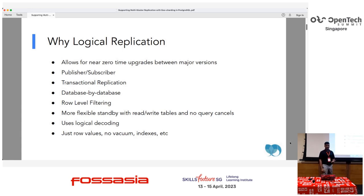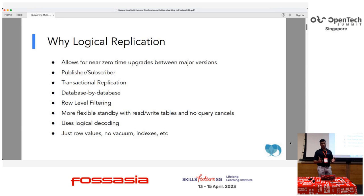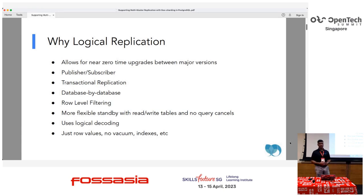Some of the use cases where database engineers use logical replication is to achieve zero downtime, or as less downtime as possible, when doing major upgrades between database versions. For example, if you are on a non-supported 9.4 and you would like to upgrade to PG-10, 11, or PG-15, you will be able to use native logical replication to do a major upgrade with zero downtime.